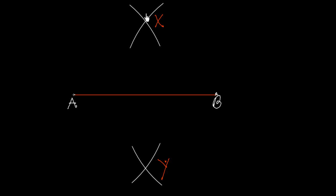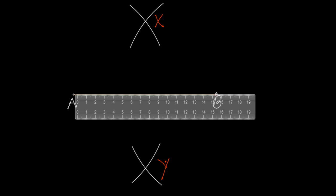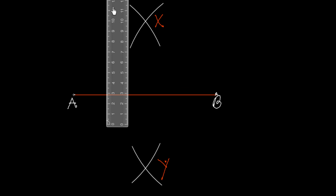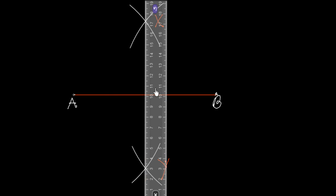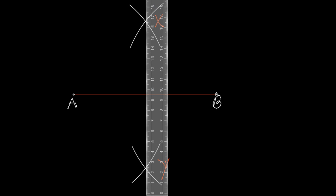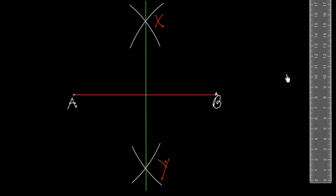Now we join these two intersecting points X and Y with the help of a scale. I draw a line here, and this line would be the perpendicular bisector of the line segment AB.